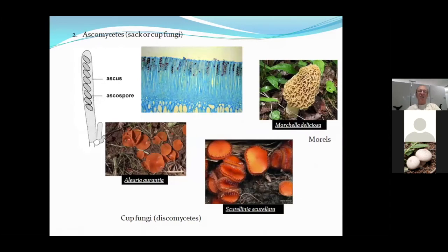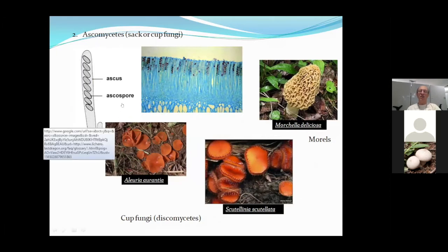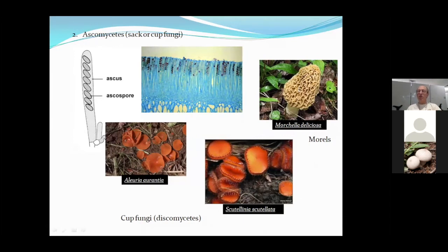The other broad group are the Ascomycetes — 'ascus' means sac in Latin. Under a photomicrograph you'd see long sac-like cells each containing four or eight spores. These fungi look like discs, such as Scutellinia, Sarcoscypha the orange peel fungus, or the delicious morels. When you go to identify these things, one of the very first questions is whether it's an Ascomycete or a Basidiomycete.